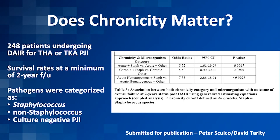Does chronicity matter? Looking at unpublished data from the HSS group — 250 patients that had DARE with survivor rates at two-year follow-up, categorized by staph aureus, non-staph, and culture-negative PJI — they found that if you had an acute staph infection versus an acute non-staph infection, you had a five times odds ratio of failing. Chronic staph versus chronic other showed the same: five times odds ratio of failing. And with acute hematogenous staph, a seven times odds ratio of failing. So having staph was the most important factor — not necessarily the chronicity of the infection.